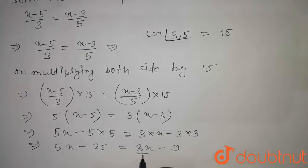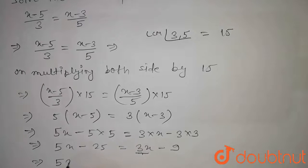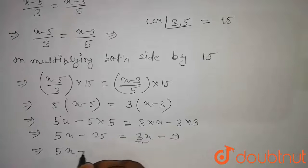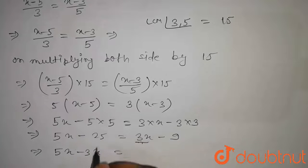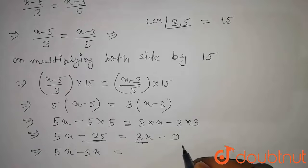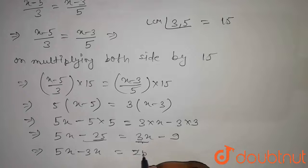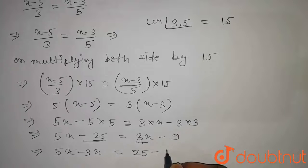And now we will bring 3x to this side, then it will be equal to 5x minus 3x. And if we take minus 25 to this side, it will be equal to plus 25 minus 9.